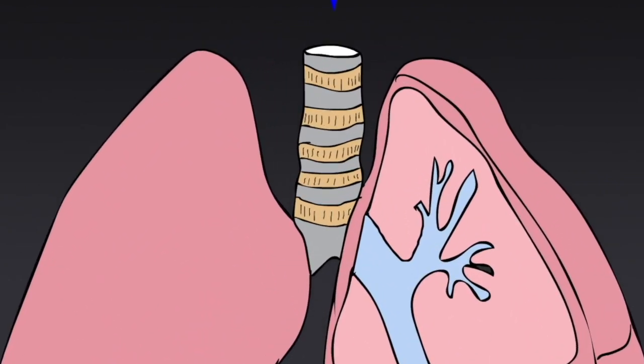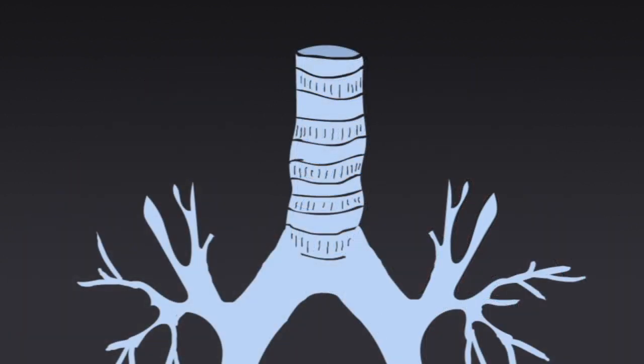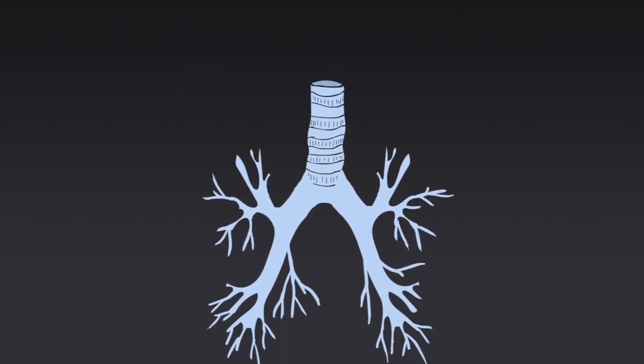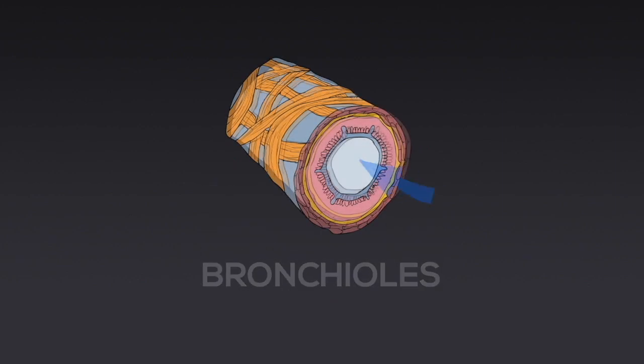The air we breathe goes to the lungs through windpipe. This windpipe splits in two and goes inside each lung. Inside the lung, it branches multiple times again and again like the branches of a tree. These tubes are called bronchioles, which carry air in and out.